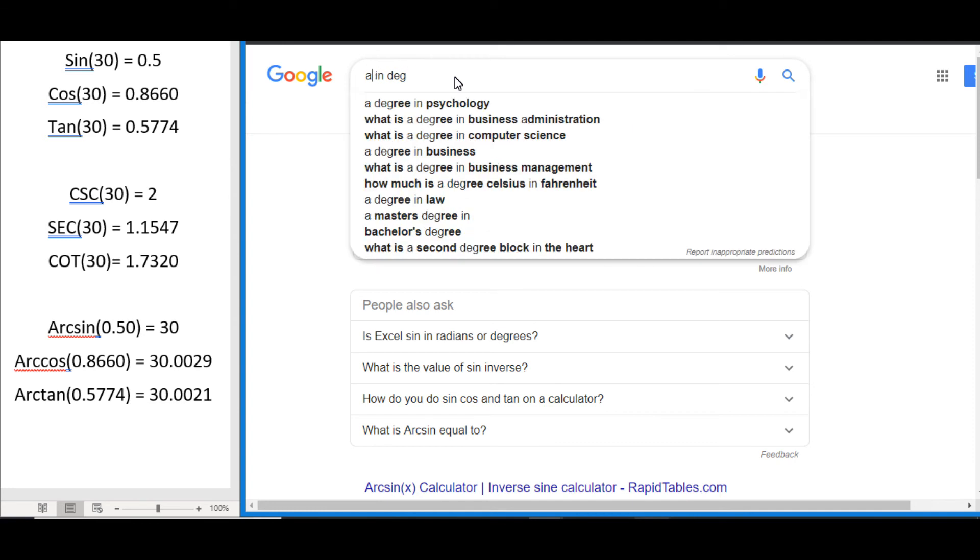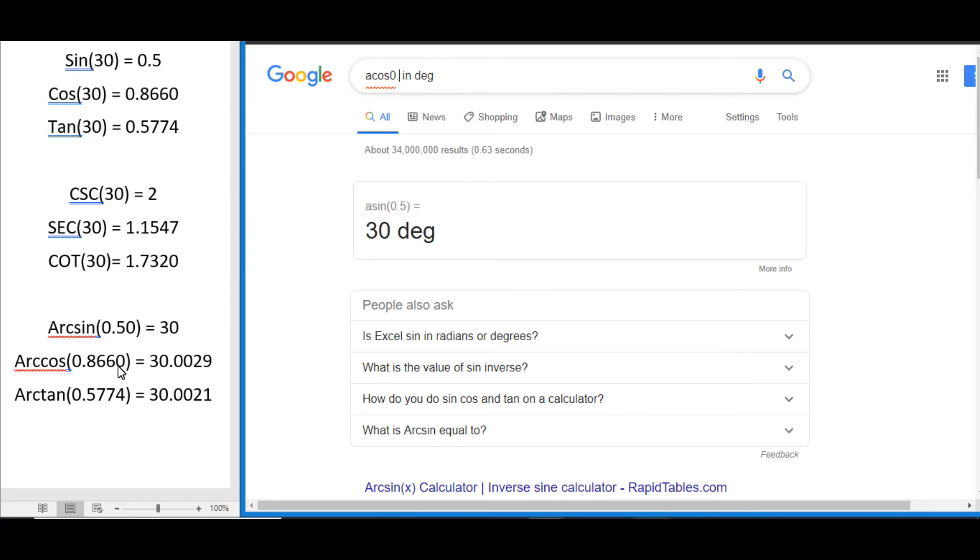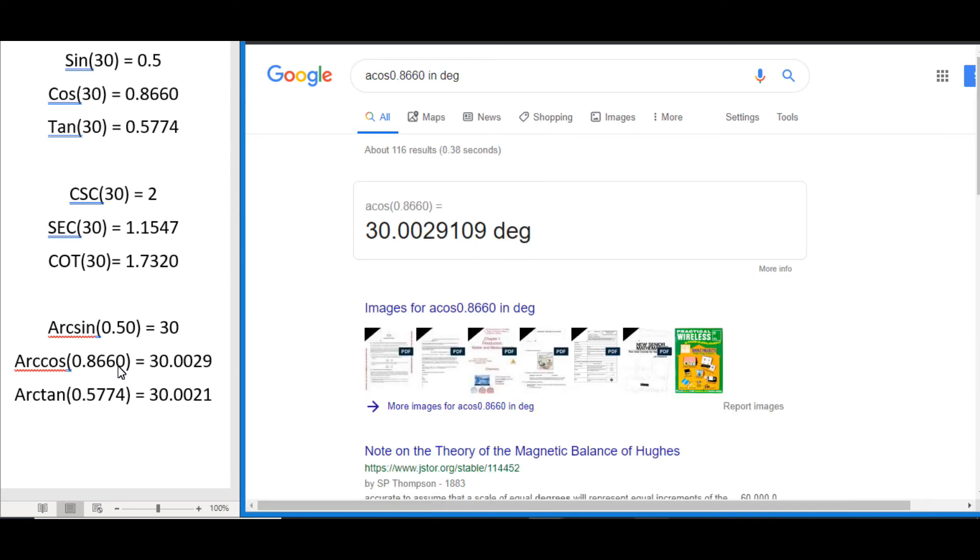If we wanted to do the arc cos, remember last time we got 0.8660, we enter 0.8660, press enter and you can see again we get what would round to 30 degrees.